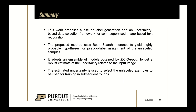In sum, in this work we propose a pseudo-label generation and an uncertainty-based data selection framework for semi-supervised image-based text recognition. The proposed method uses beam search inference to yield highly probable hypotheses for pseudo-label assignment of the unlabeled samples. Furthermore, it adopts an ensemble of models obtained by MC dropout to get a robust estimate of the uncertainty related to the input image. Finally, the estimated uncertainty is assessed to select the unlabeled examples to be used for training in subsequent rounds.